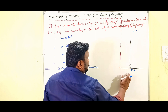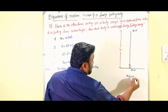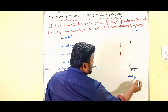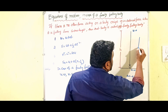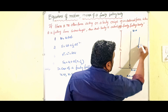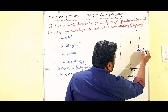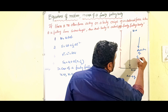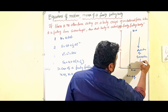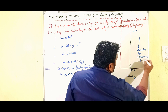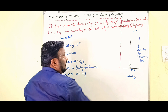And a is equal to plus g. Acceleration is plus g because the body is coming in the direction of gravitational force — that's why the acceleration due to gravity is taken as plus g. The direction of gravitational force is always downwards.